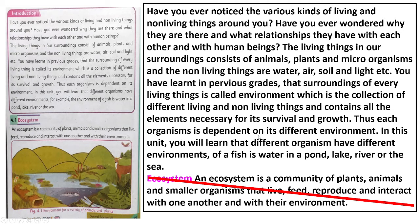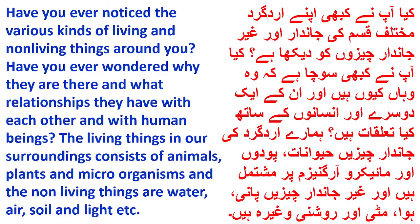The environment contains all the elements necessary for its survival and growth. Thus, each organism is dependent on its different environments. For example, the environment of a fish is water — in a pond, lake, river and the sea.